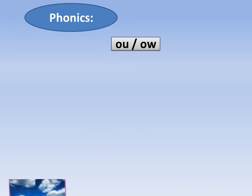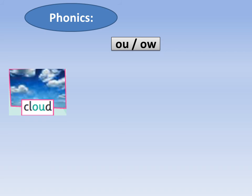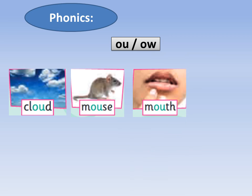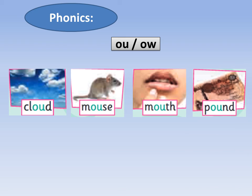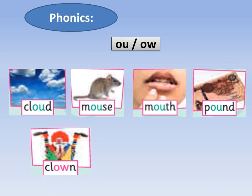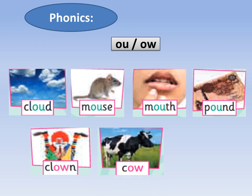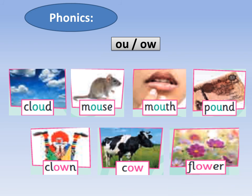Phonics. Our phonics in this unit: OU and OW. OU like cloud, mouse, mouth, pound. OW like clown, cow, flower.